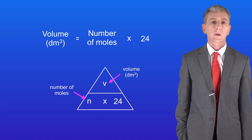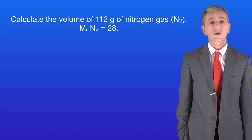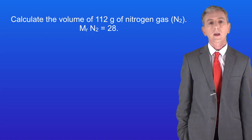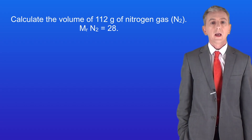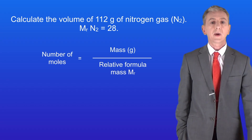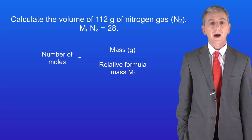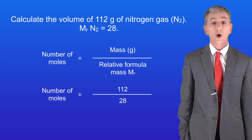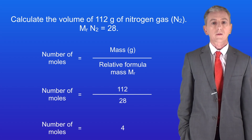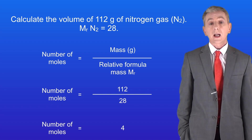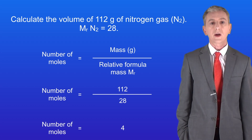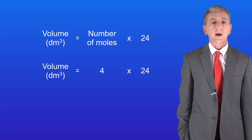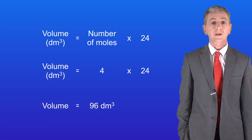Here's a sample question: calculate the volume of 112 grams of nitrogen gas N2. The relative formula mass of nitrogen gas is 28. First we need to calculate the number of moles of nitrogen using the equation: the number of moles is the mass divided by the relative formula mass. So 112 divided by 28 tells us that we've got 4 moles of nitrogen. Now we can calculate the volume: 4 multiplied by 24 gives us a final answer of 96 decimetres cubed.